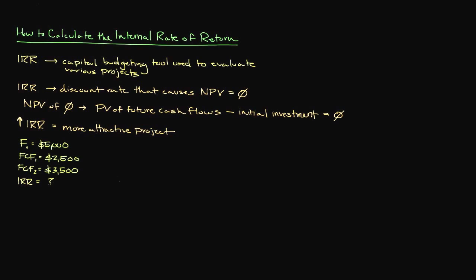To answer this question, it helps to first draw out our scenario as follows. Next, we need to select an interest rate that we feel may cause our future cash flows to be worth $5,000 after being discounted. Remember, this is a trial and error process, so don't worry too much about having to repeat the process.